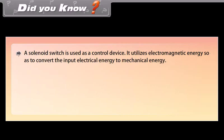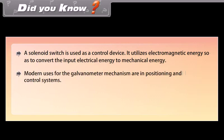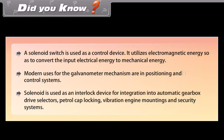Did you know? A solenoid switch is used as a control device; it utilizes electromagnetic energy to convert input electrical energy to mechanical energy. Modern uses for the galvanometer mechanism include positioning and control systems. Solenoids are also used as interlock devices in automatic gearbox drive selectors, petrol cap locking, vibration engine mountings, and security systems.